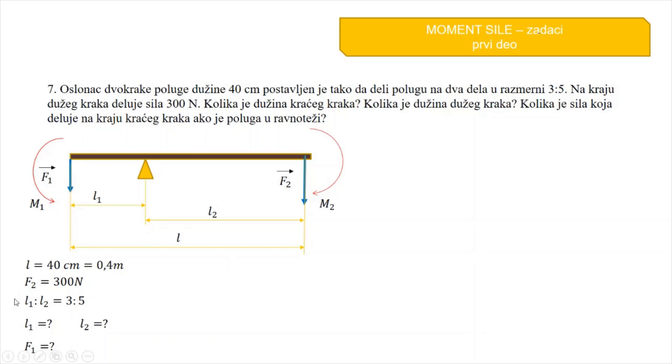Prvo ću krenuti od ovog odnosa ovde. L1 prema L2 je 3 prema 5. I to mogu napisati ovako. L1 je jednako 3K, a L2 je jednako 5K. To sam napisao iz ovog ovde. L1 je 3K, L2 je 5K. Znam da je L, ova cijela dužina ove poluge, jednaka L1 plus L2. Kad saberem L1 i L2, dobit ću L. To sam i napisao ovde. Umesto L1, sada pišem 3K, umesto L2 pišem 5K. L će biti u tom slučaju jednako 8K. Kad saberemo 3K plus 5K je 8K. Znam da mi je L jednako 0.4 metra, jednako je 8K. Samo ovo K će biti jednako 0.4 metra podeljeno sa 8 i K će biti jednako 0.05 metara.